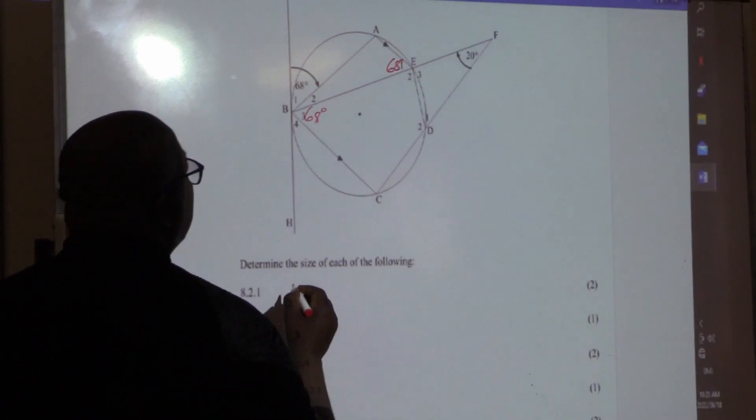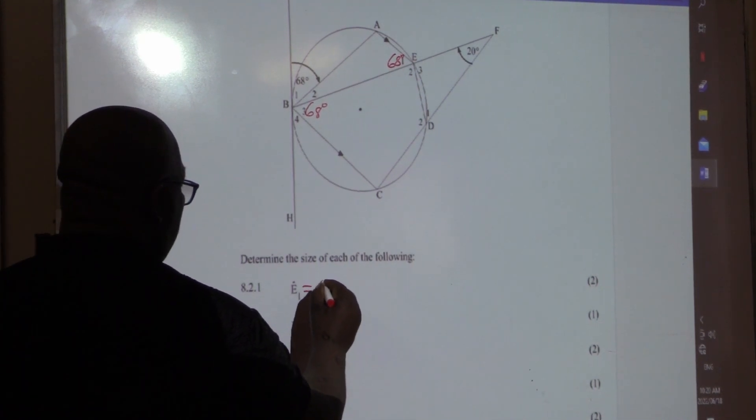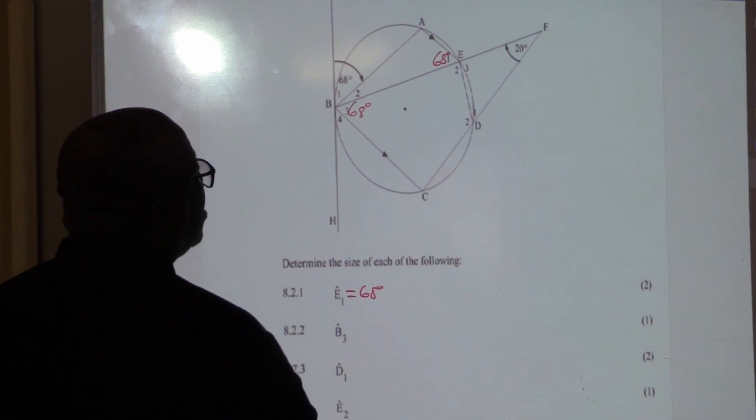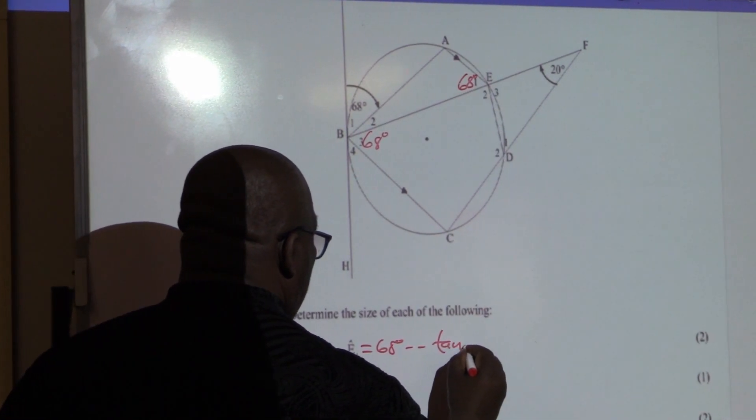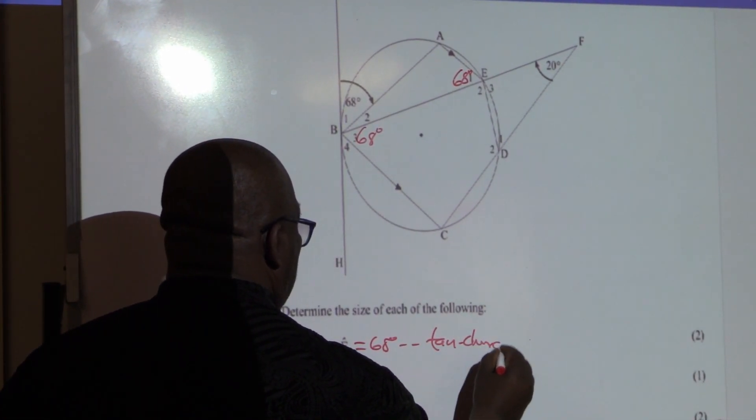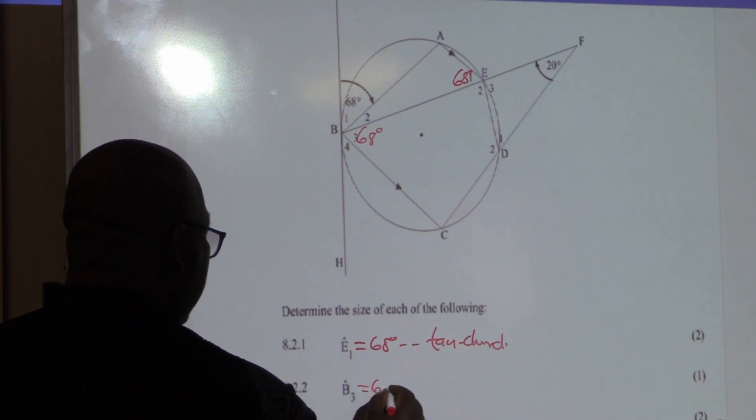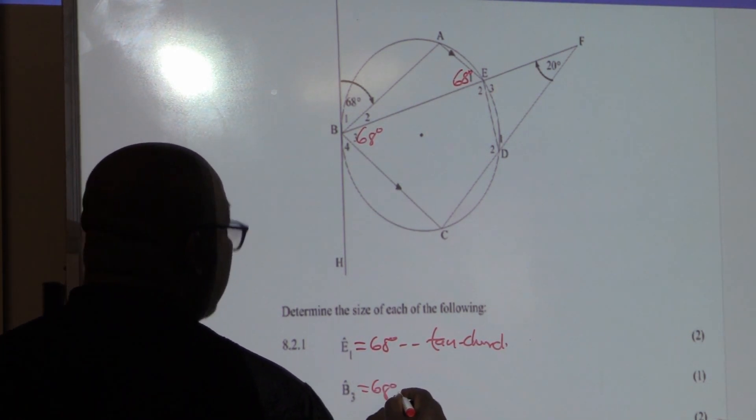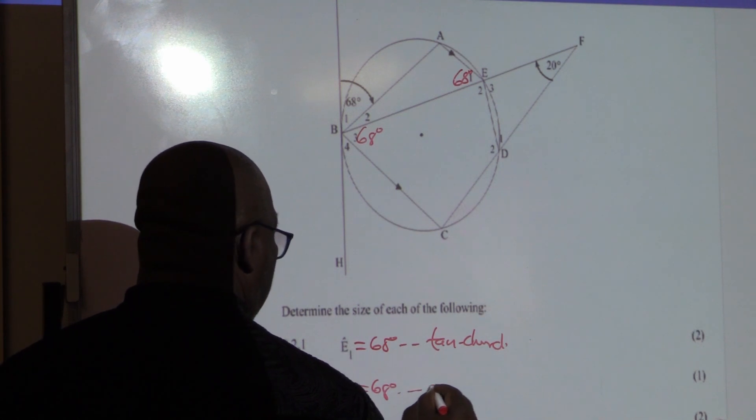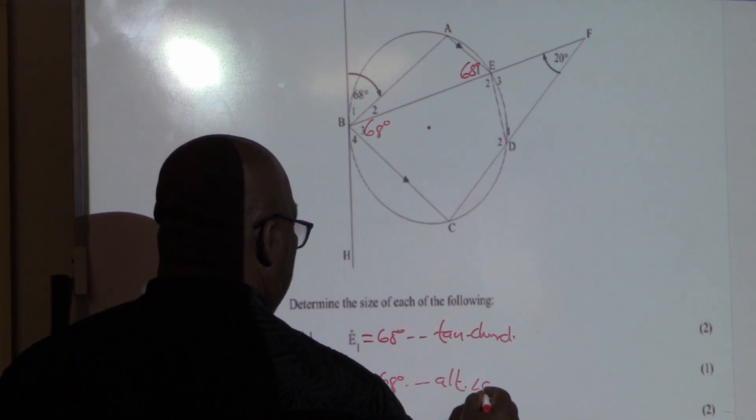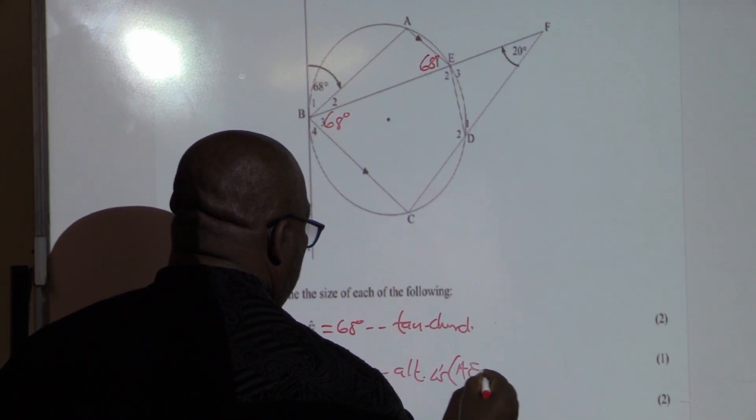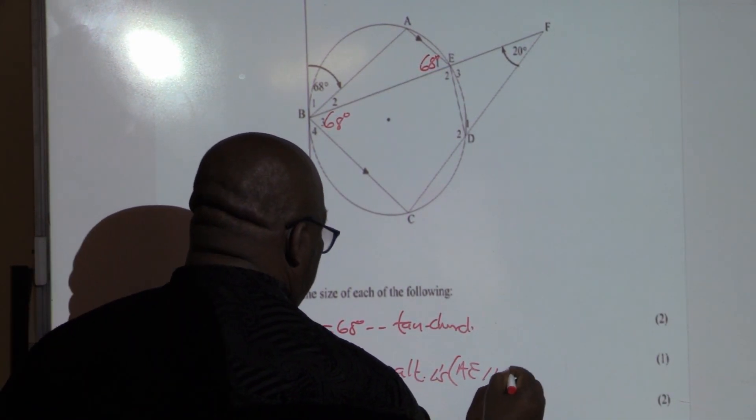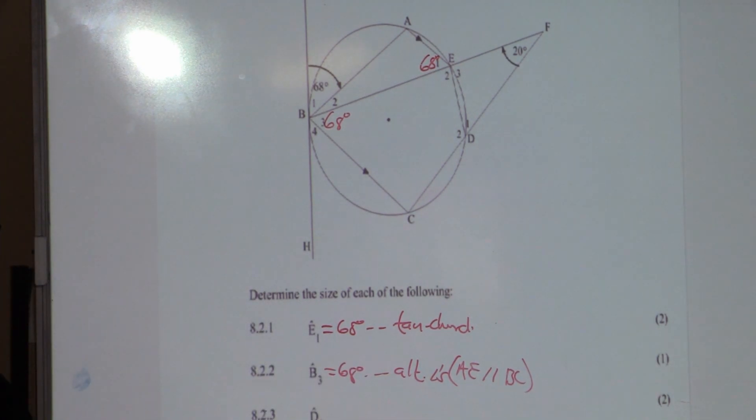You'll say B3 is 68 degrees. Alternate angles, AE parallel to BC. Let me write that one. B3, say E1 is equal to 68 degrees. What was the reason? Tangent-chord theorem. Now we are saying B3 is also equal to 68. What is the reason? Alternate angles. And what are parallel lines? AE parallel to BC. So I get my marks.